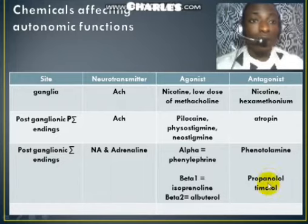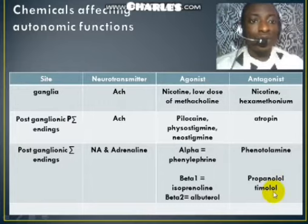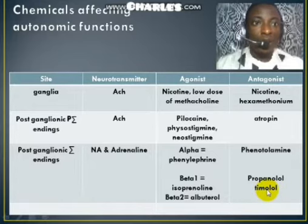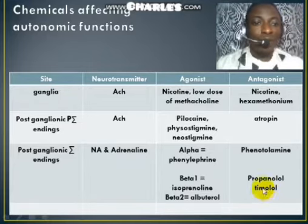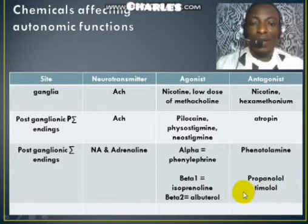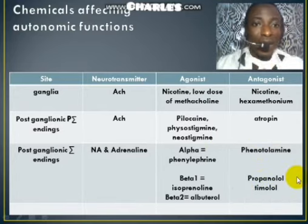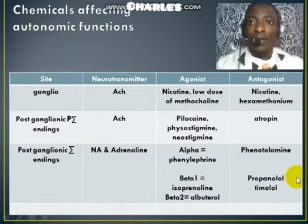Propranolol is a drug that can be used to manage hypertensive patients. It is also used to treat cardiac arrhythmia and conditions that result in increased heart rate, cardiac output, and blood pressure. Timolol is a drug that can be used to treat glaucoma, as it helps to reduce high intraocular pressure of the eye — a drug that optometrists use very well.